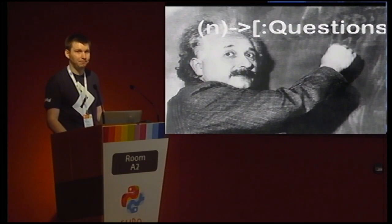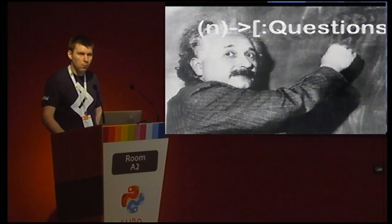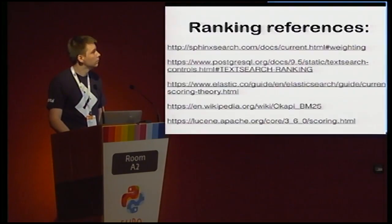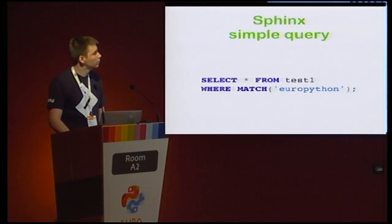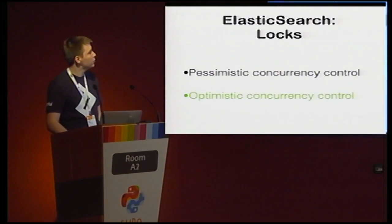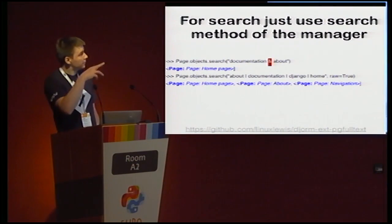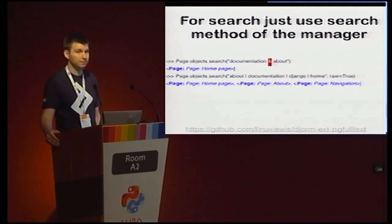Q: I have a question about operators in Django full-text search. You mentioned there are only AND and OR operators — can we combine them? For example, 'John AND Doe OR Foo AND Bar'? A: Yes, you can. And by the way, it's a feature not just of Django — it's a feature of Postgres itself.